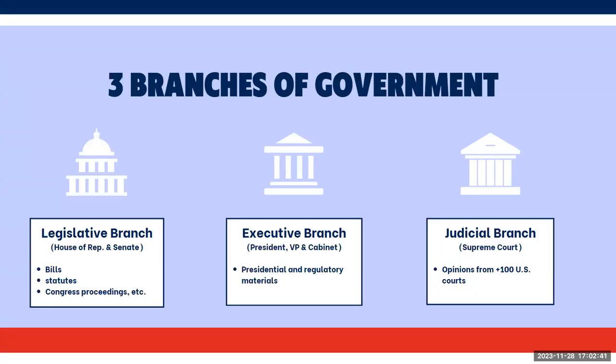The three branches of government are the legislative branch, the executive branch, and the judicial branch. The legislative branch consists of the House of Representatives and the Senate. They pass, change, and repeal laws. The type of information they produce are bills and statutes, Congressional Committee materials, and proceedings of Congress.